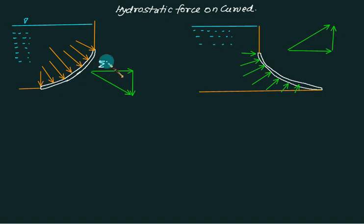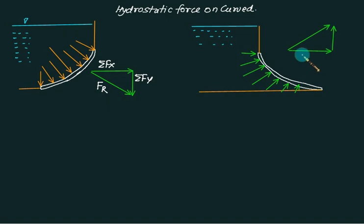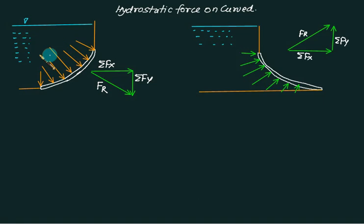So this is the summation of Fx, this is the summation of Fy, and this one is my resultant force Fr. Summation of Fx, summation of Fy, and this one is Fr. Is the water really present above the gate? Yes - and that is why it will push the gate in a downward direction.